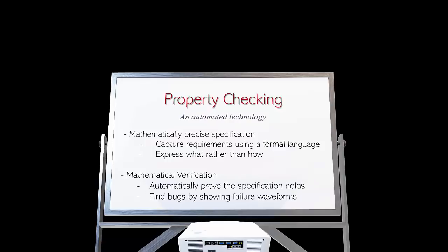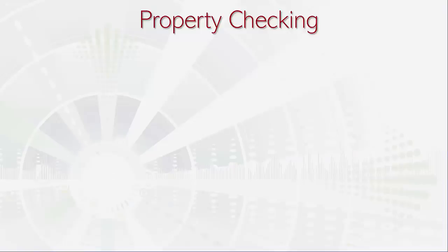It's an automated technology. In property checking, we specify requirements using mathematically precise specification languages such as PSL and System Verilog assertions. They can be used to capture requirements and express more often what rather than how. They're declarative in nature and describe the input-output behavior of a design. When specified like this, a mathematical verification algorithm automatically proves if that specification holds on the design. If it cannot prove, it can trigger a failure, showing you the bugs in the design by pulling up failing waveforms.